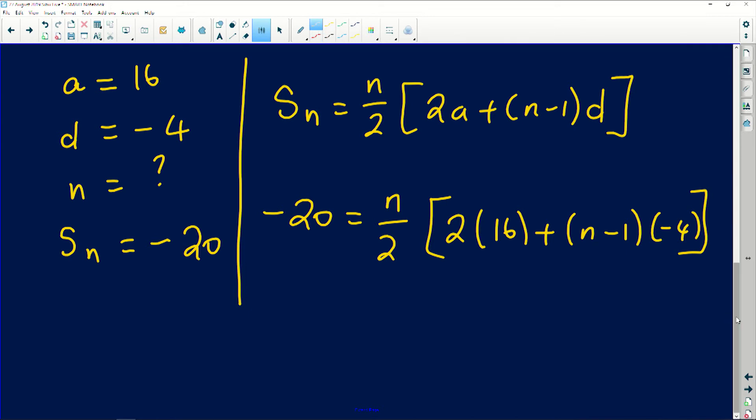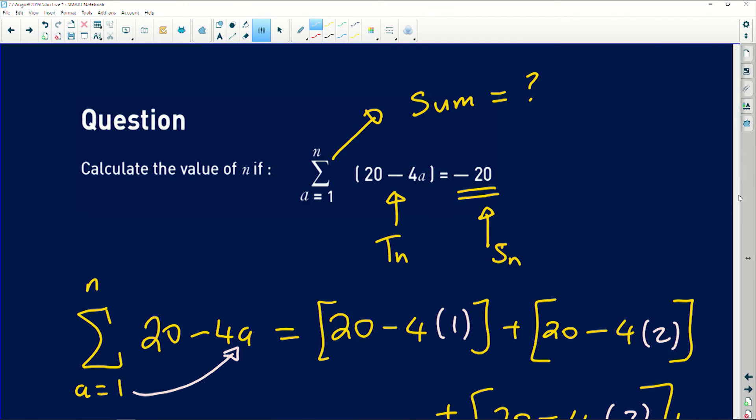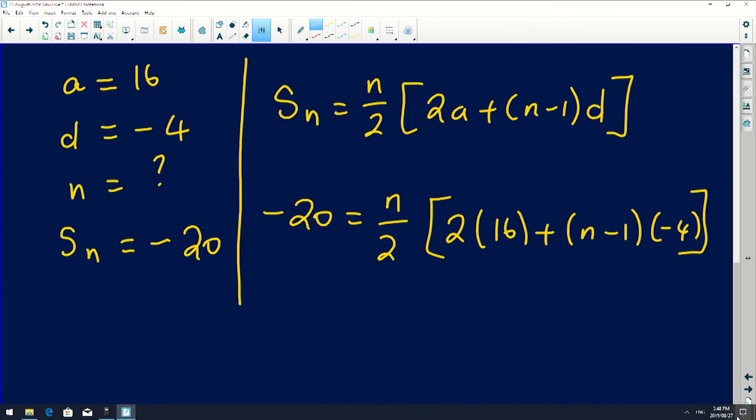Now it's basic algebraic simplification. You need to cross multiply this over to that side. Negative 20 times 2 will give you negative 40, leaving you with n in the numerator. 2 times 16 is 32, and then you're going to distribute the negative 4: minus 4 times n and minus 4 times minus 1. So minus 4 times n gives us minus 4n, and minus 4 times minus 1 gives us positive 4.